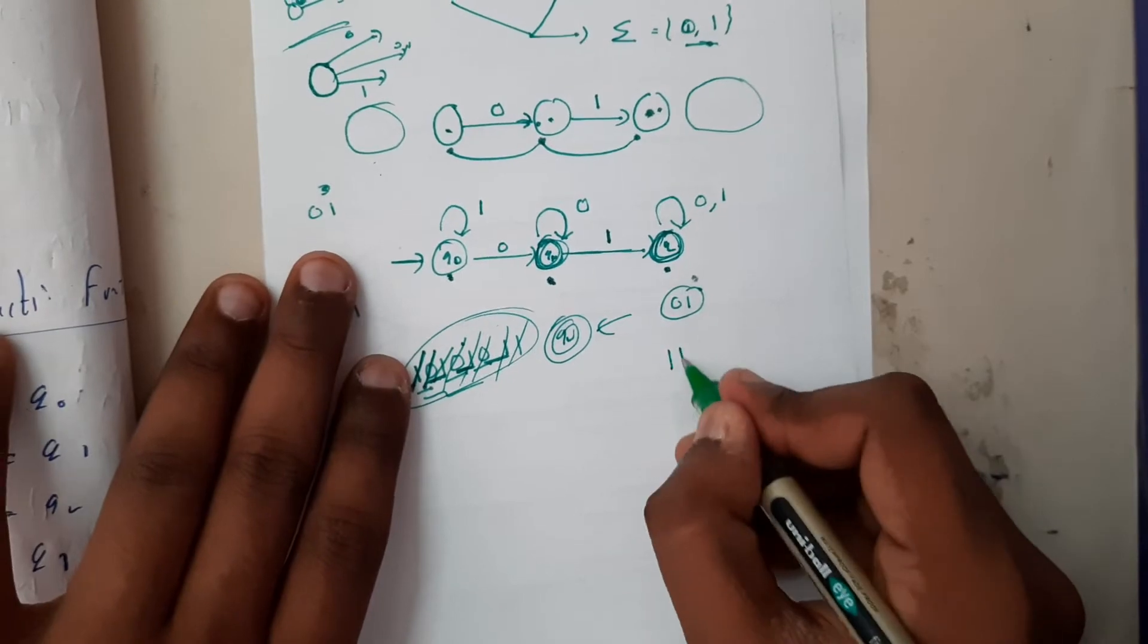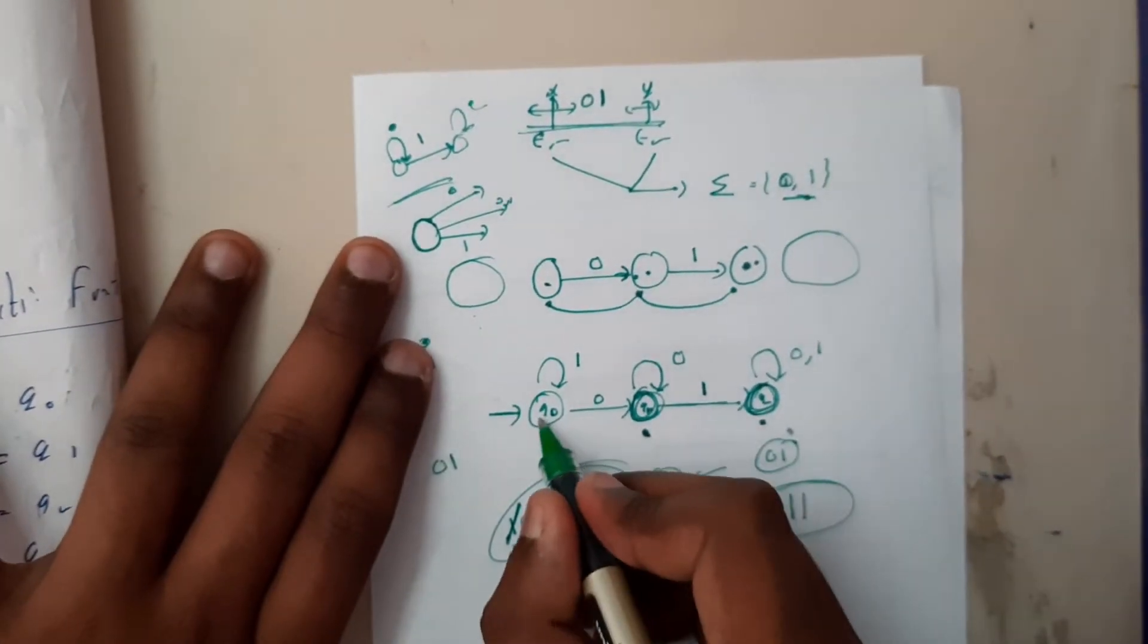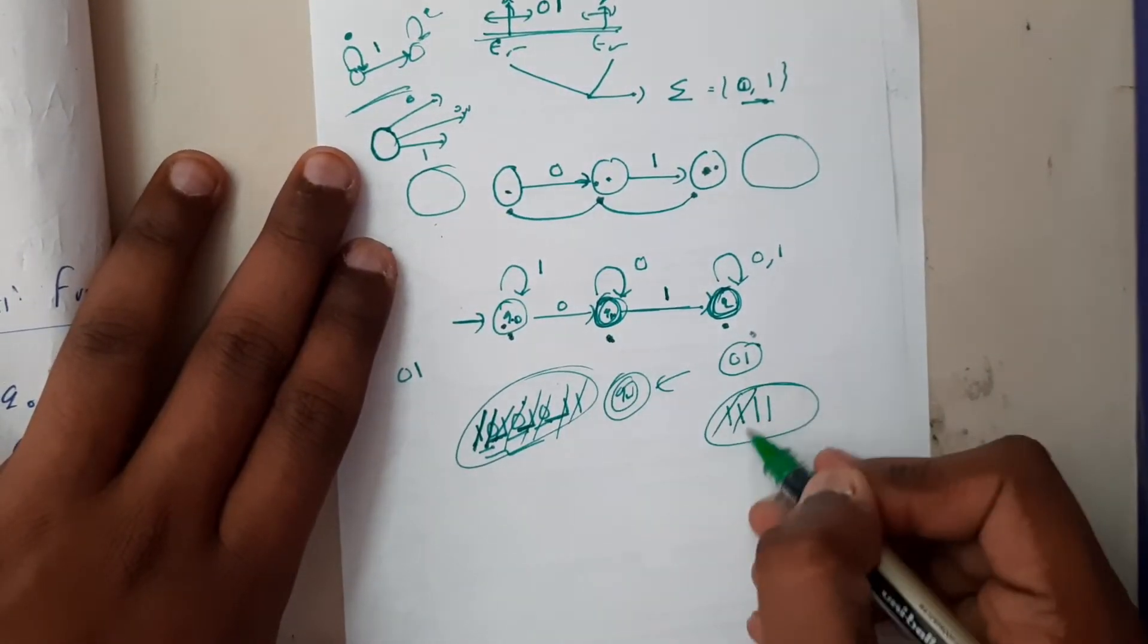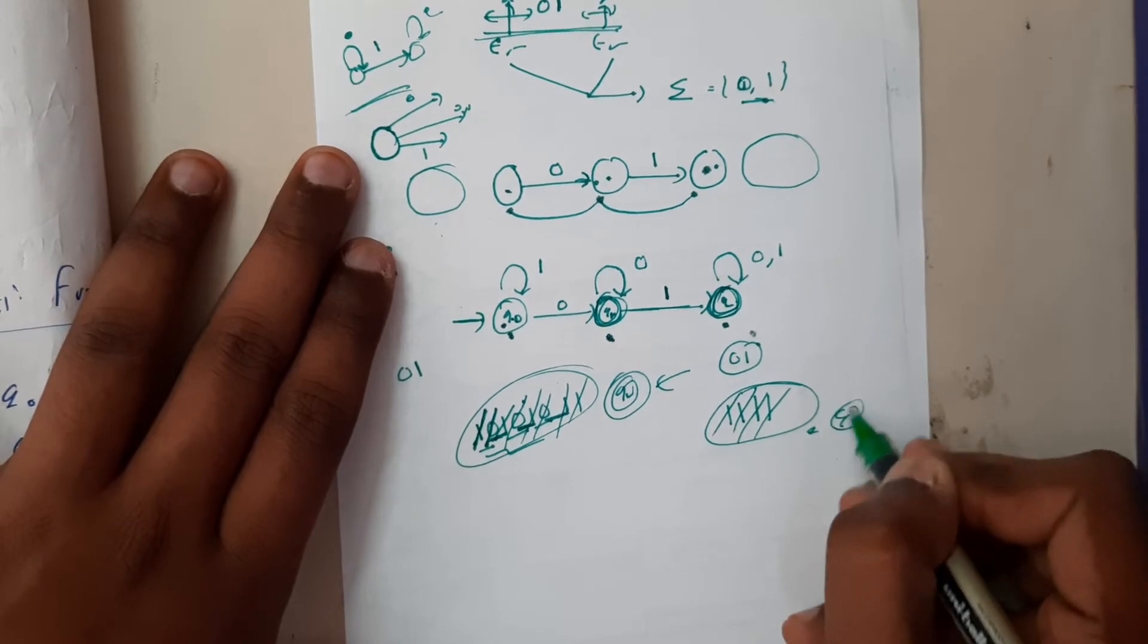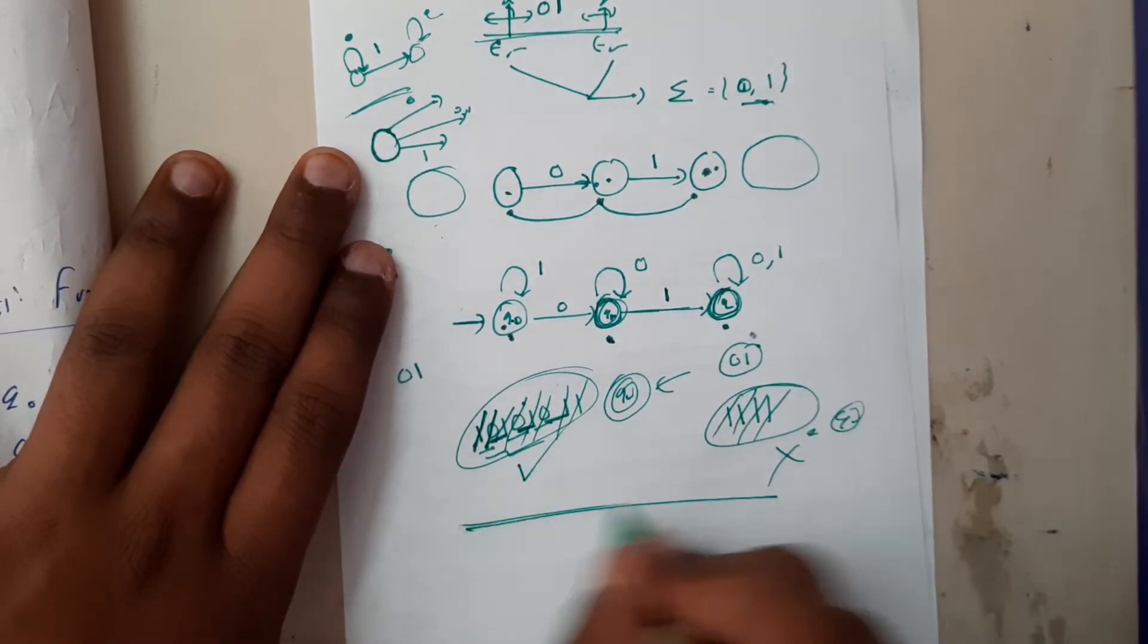After that it takes zero, it stays in q2. It takes one, q2 q2 q2. Finally it is in q2, so it is accepting. What if it rejects? Let us take triple one. It started here, so initial symbol is one. It took a self loop q0 q0 q0. It stayed in q0 only, hence this string is rejected and this thing is accepted.